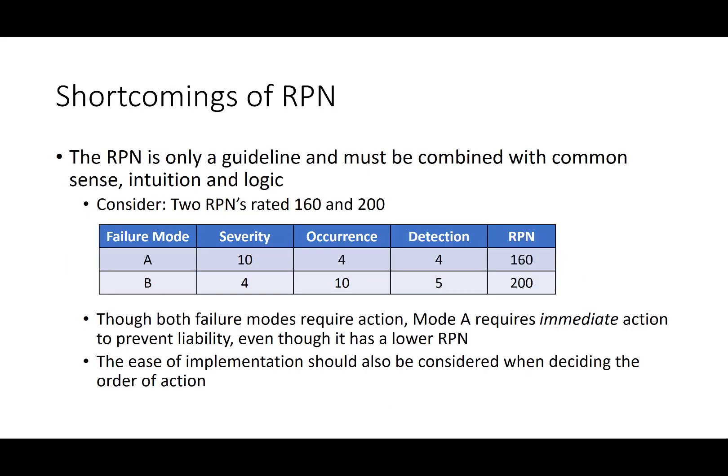One of the main shortcomings of the RPN number is that it is essentially just a guideline and must be combined with common sense, intuition, and logic. When assessing this risk, you may not have data to quantify how likely the occurrence, detection, or severity is because you have not yet implemented the system and have no way to measure or evaluate it. In those cases, you might have to use the best available data, judgment, or intuition, and realize that the number itself can be a little arbitrary — more directional than finite.